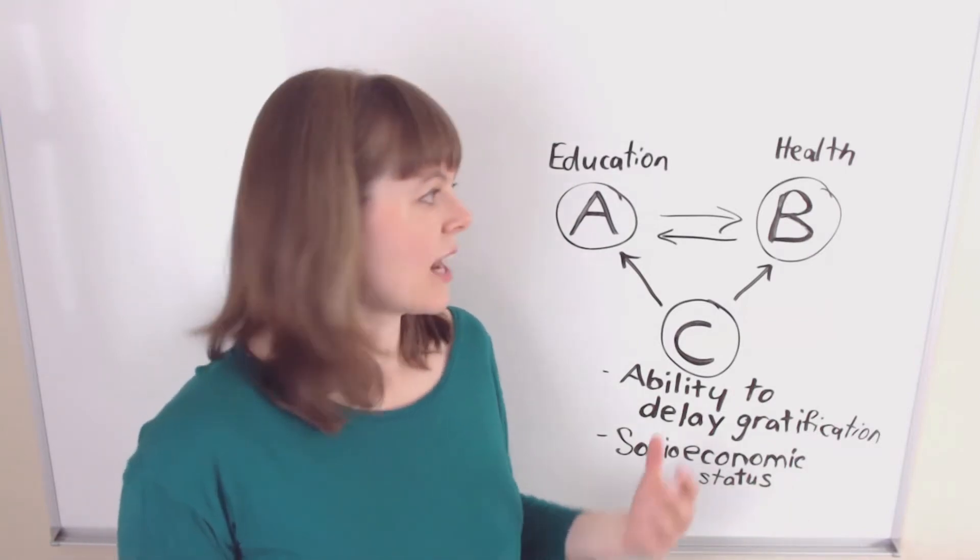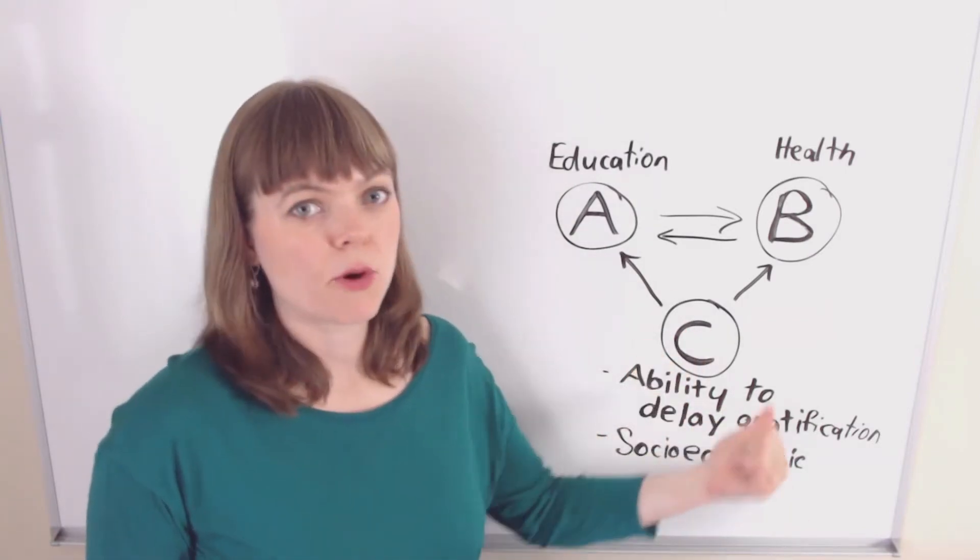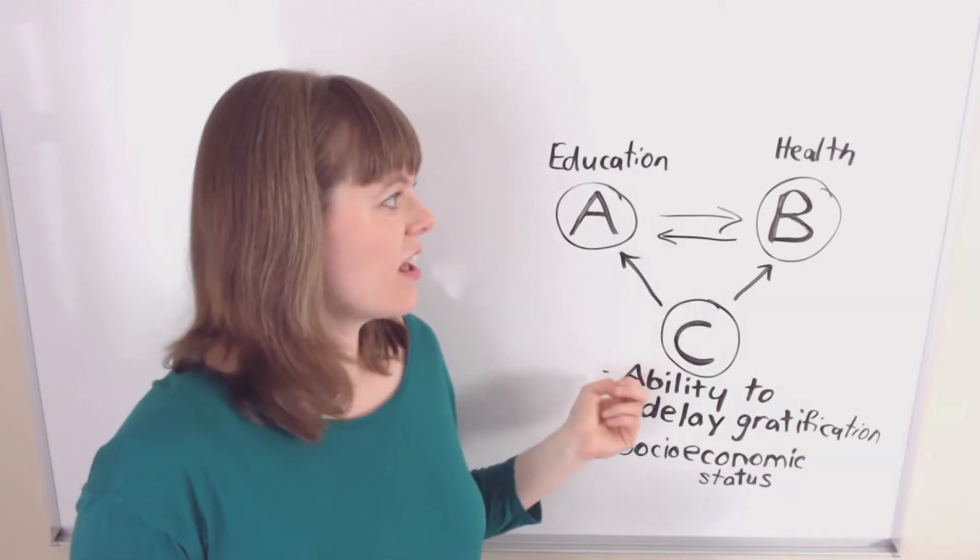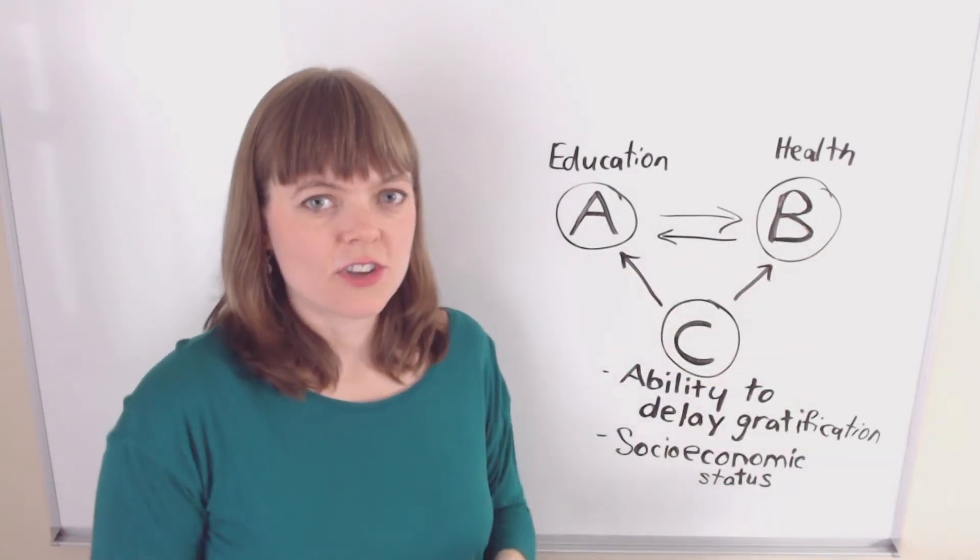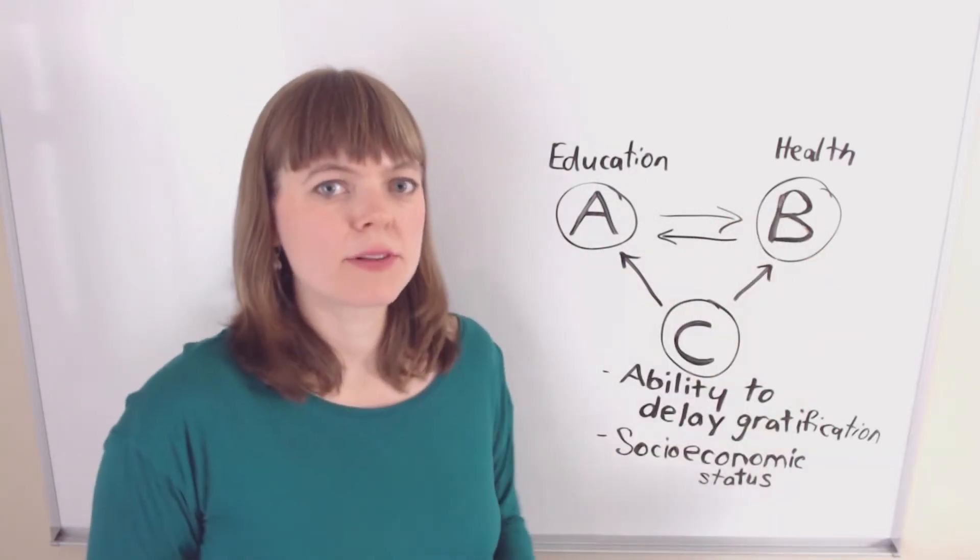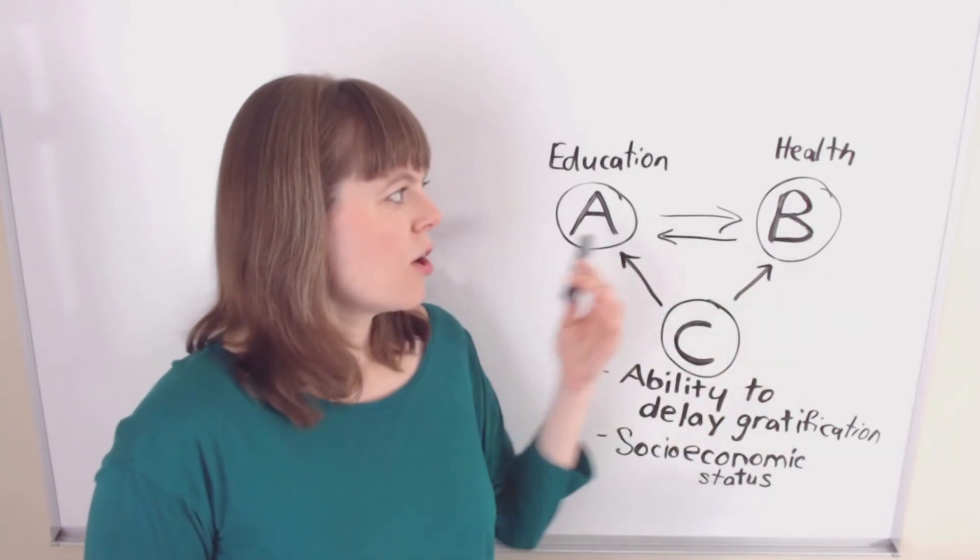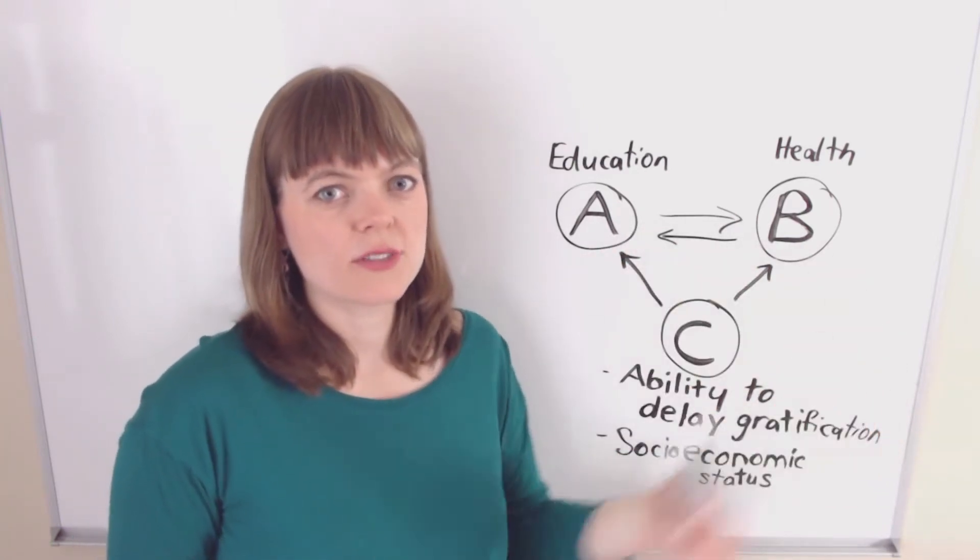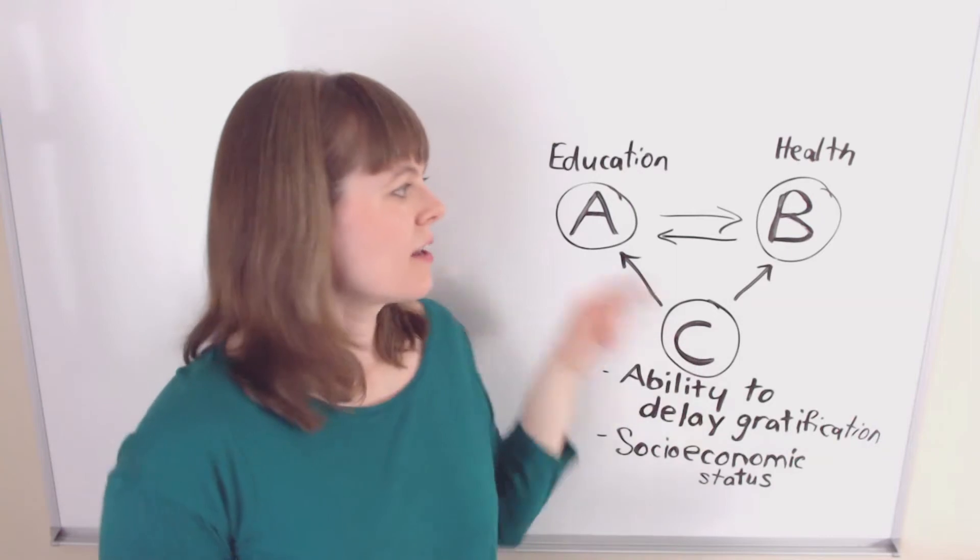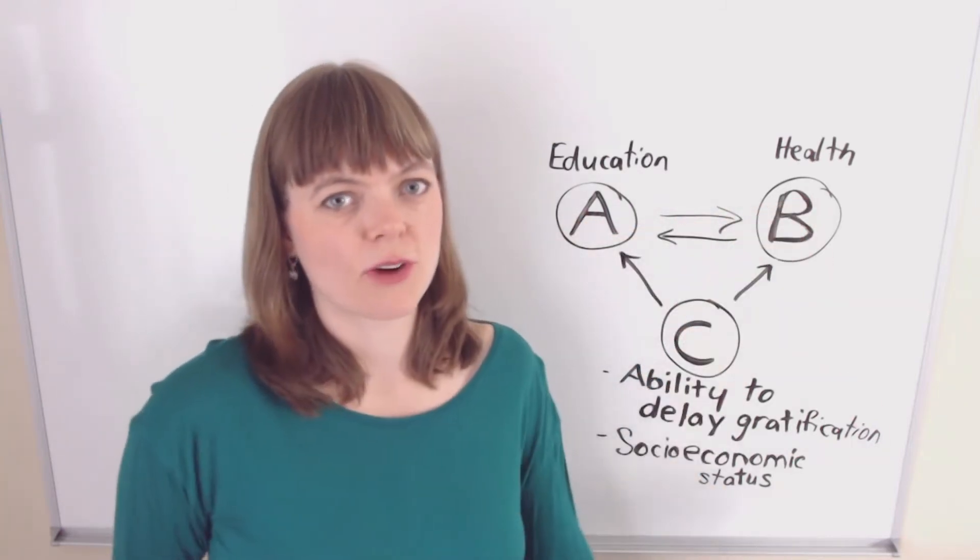Other things like socioeconomic status are positively correlated with both access to education and also health. So there are many different factors that could be at play. How do we actually figure out which direction causality goes and how much of the causality can be attributed to one particular direction?